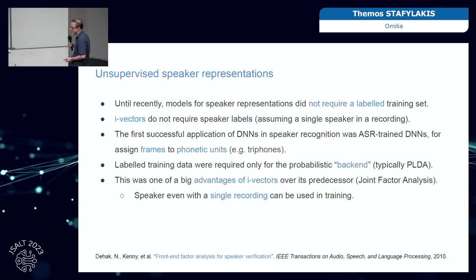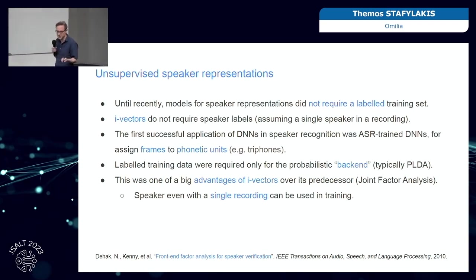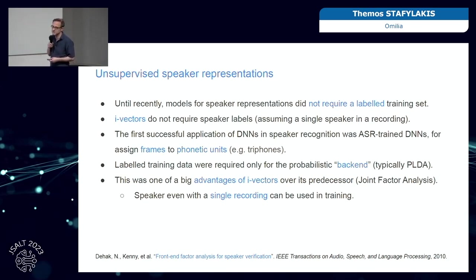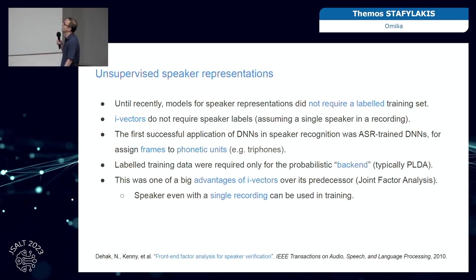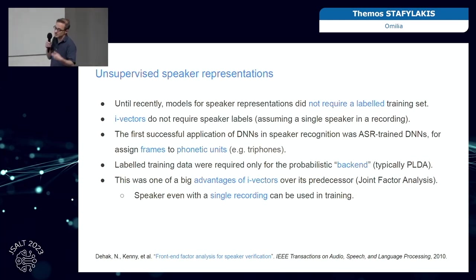Until recently, models for extracting speaker representations did not really need a labeled training set with respect to the speaker. The i-vectors extractor was trained in an unsupervised way. And the first successful application of deep neural networks in speaker recognition was not really about building a speaker recognition system — rather, it was about taking a speech recognition system and using it to help assign frames to phonetic classes, rather than doing it totally unsupervised with a GMM. That doesn't mean you didn't need labeled data — you need it for training the PLDA backend — but for the main extractor, you didn't.